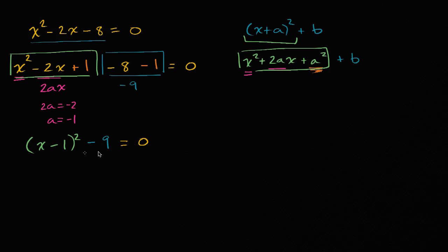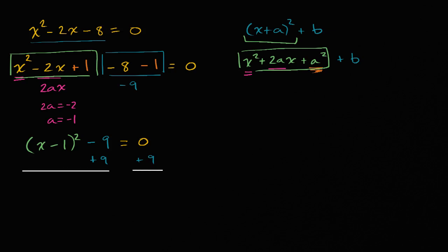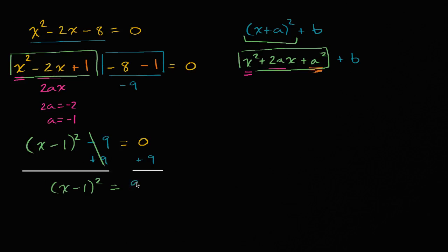I can add 9 to both sides so I just have the squared expression on the left-hand side. Adding 9 to both sides, on the left those cancel out, and I'm left with x minus 1 squared equals — on the right, 0 plus 9 is 9.